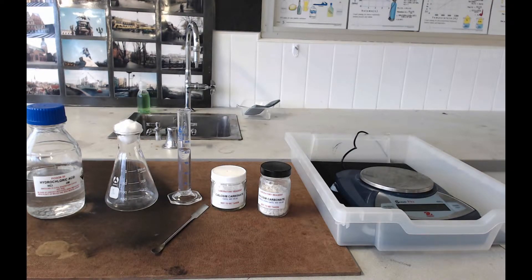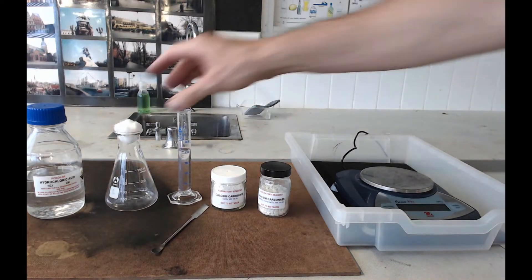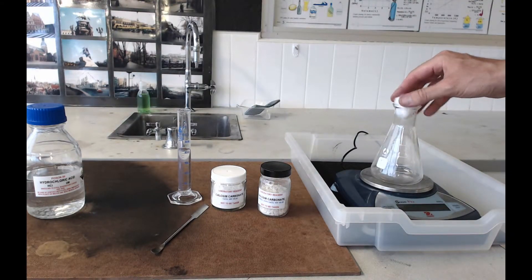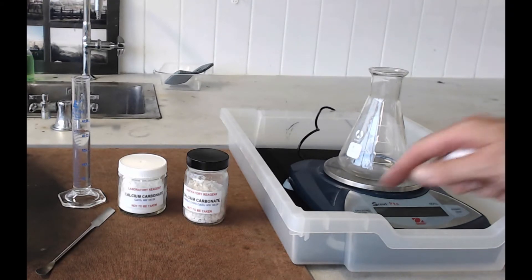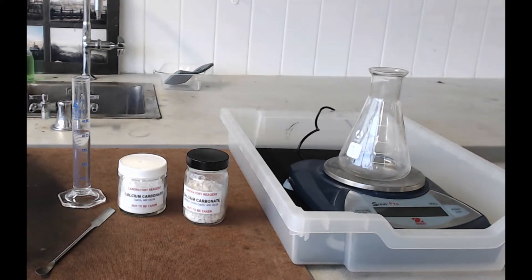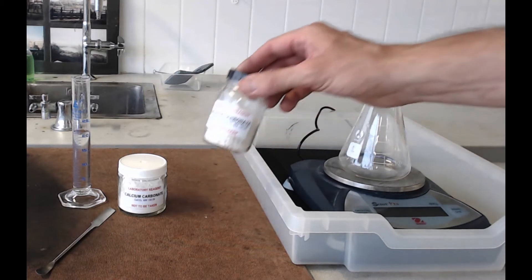The next thing you're going to need to do is put your conical flask on the balance. It might be a good idea to reset this balance because what you want to do now is just to take 2g of whichever calcium carbonate you're going to use first and weigh it out on the balance.